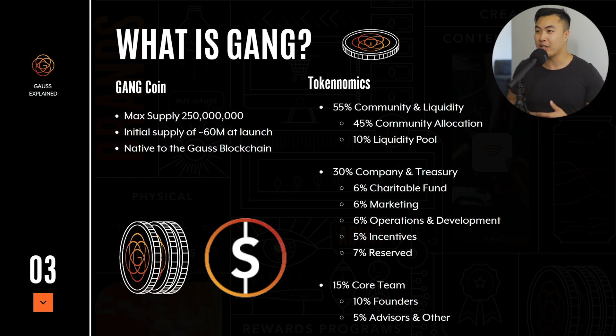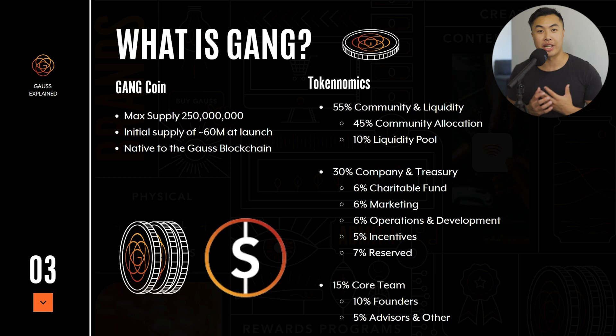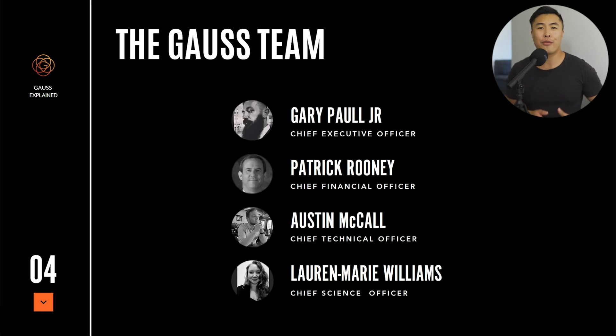55% goes to the community and liquidity. 30% is going to the company and treasury. And 5% of it is going to the core team members, and that is also being divided into different categories.